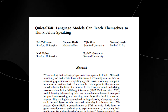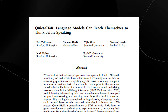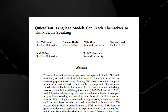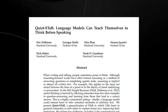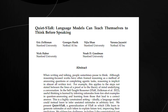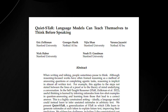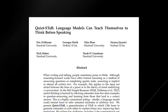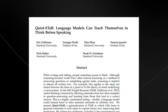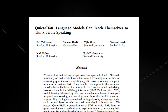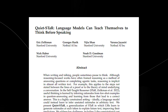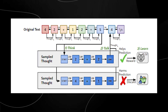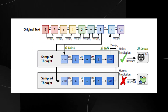QuietStar operates in three main steps that form a learning loop. Step one: Think. As the model processes each token of text, it generates some thoughts or reasoning statements relevant to predicting what comes next. Multiple possible thoughts are sampled at each point.